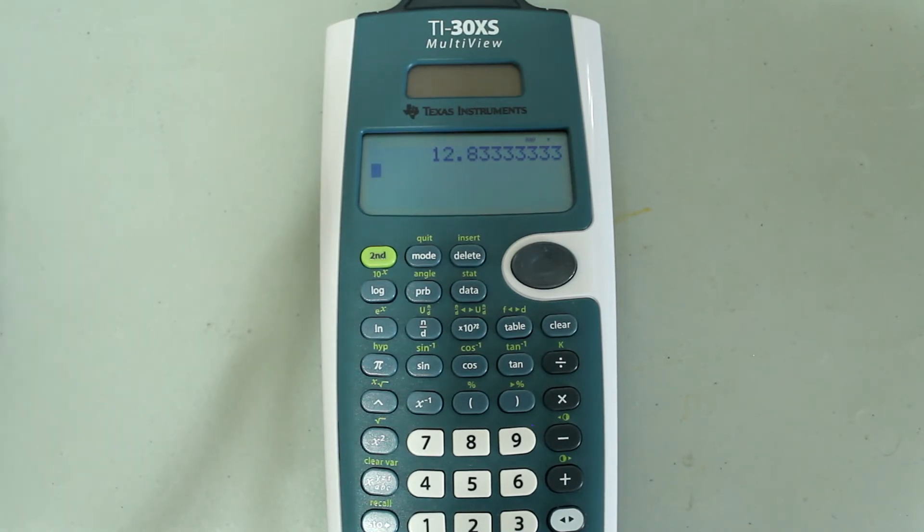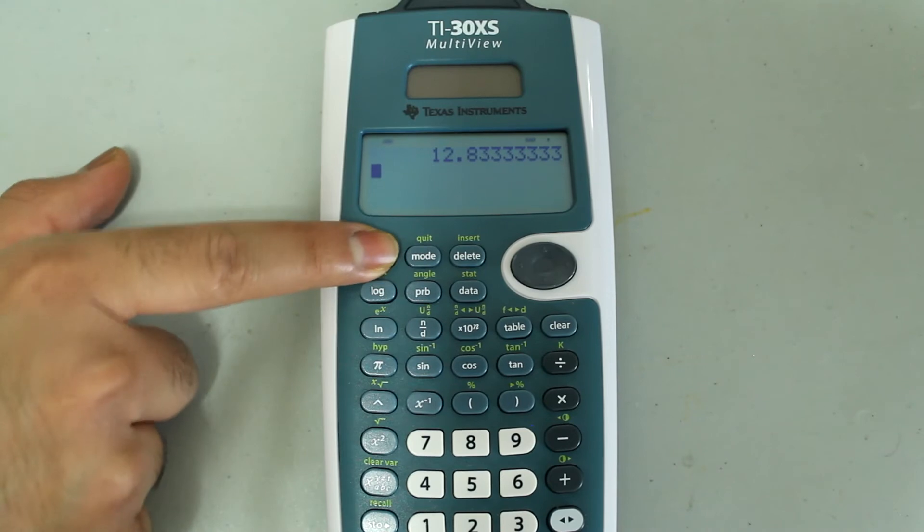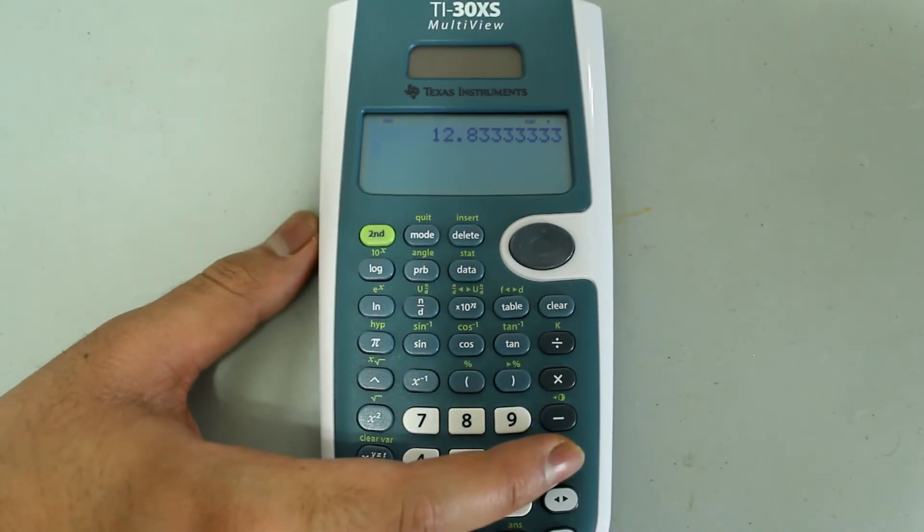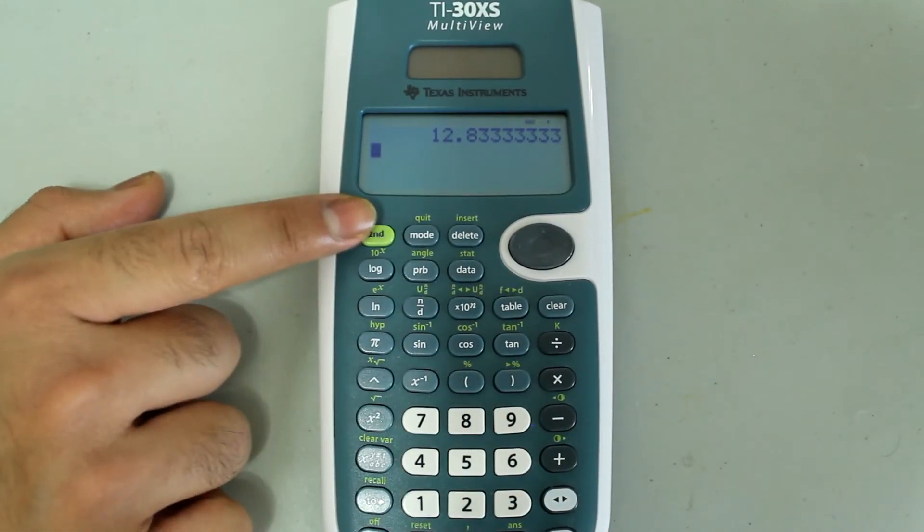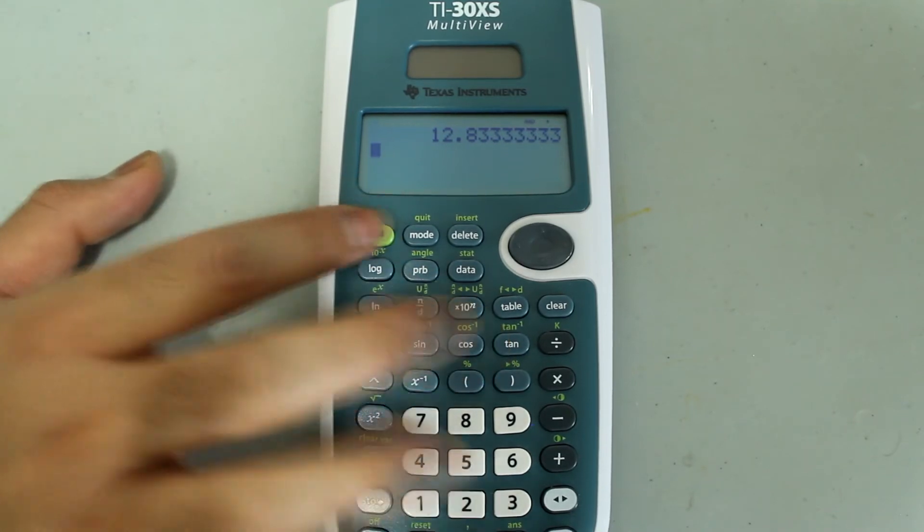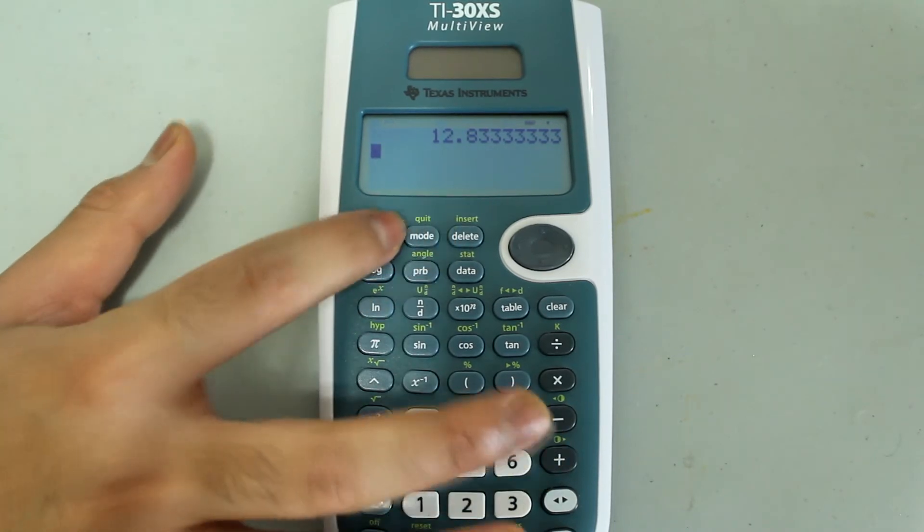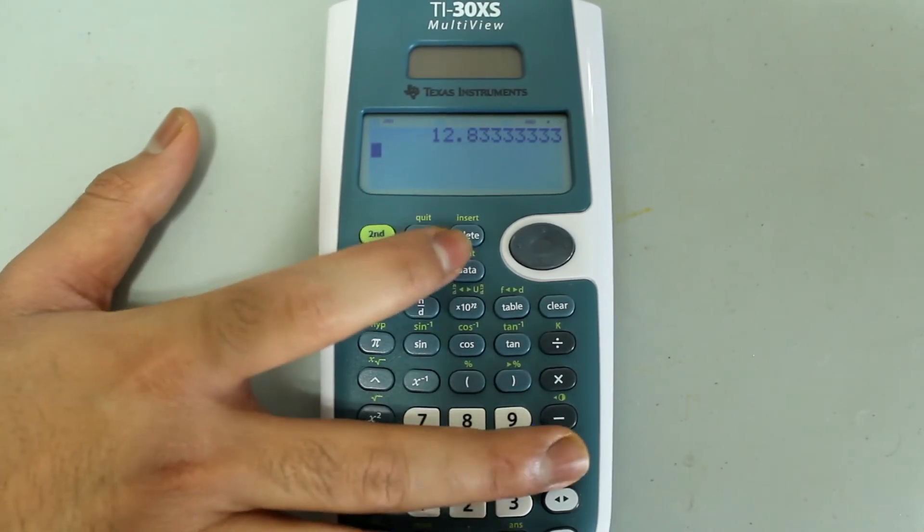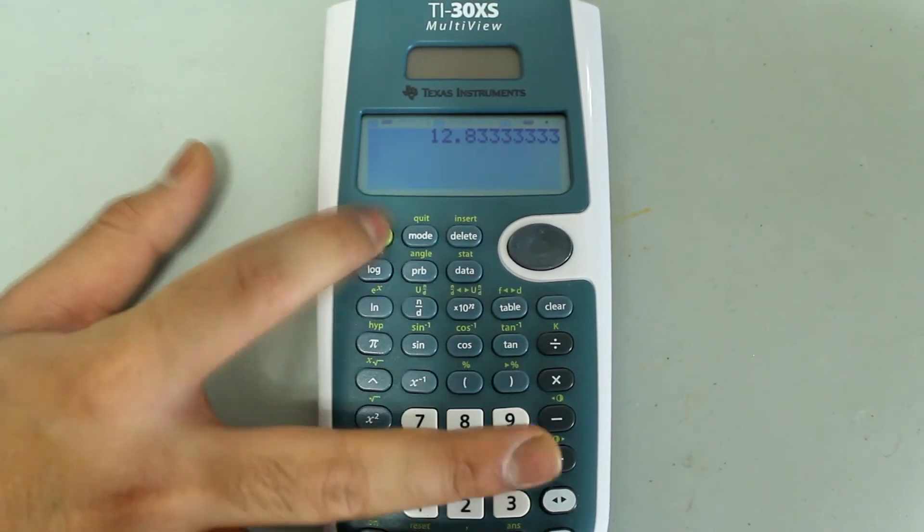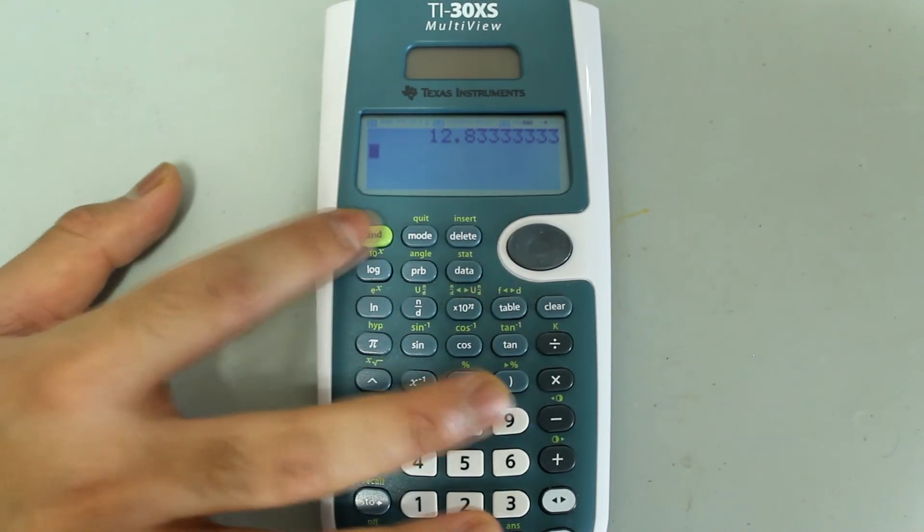So if you want to darken your screen, press second followed by the plus sign. You can't just hold second and keep pressing plus, you have to press second, follow that with the plus sign. So, second, plus, second, plus, second, plus, like that. And you can see that the screen is getting darker.